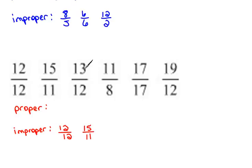Next, we have 13 twelfths. 13 is larger, so the numerator is larger. That is an improper fraction.